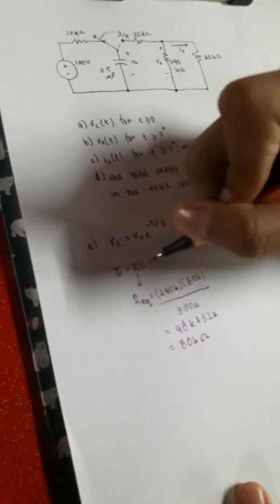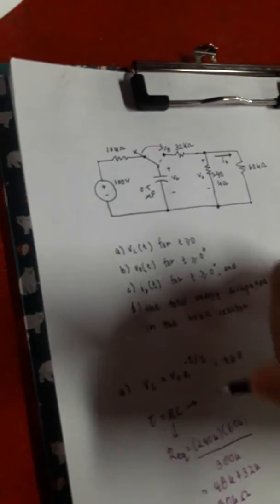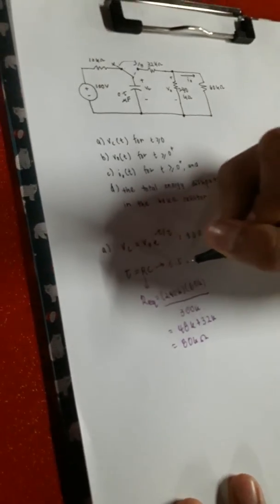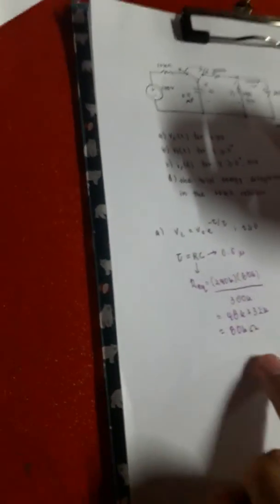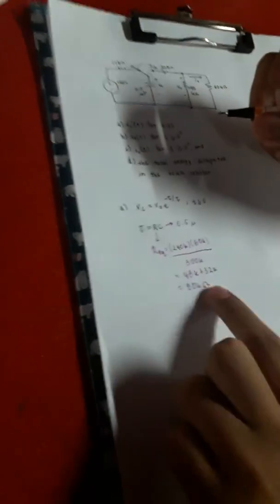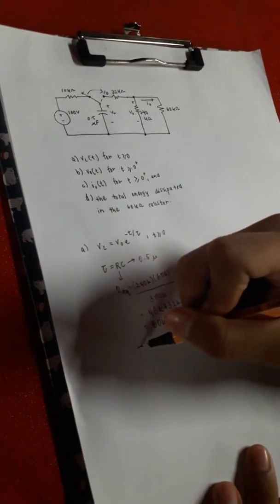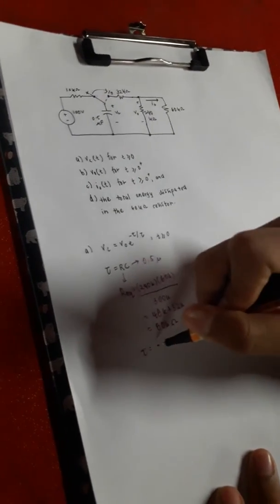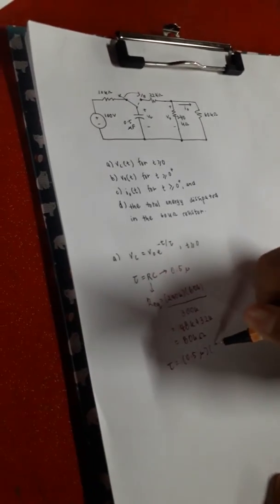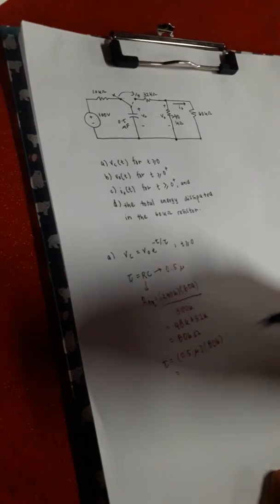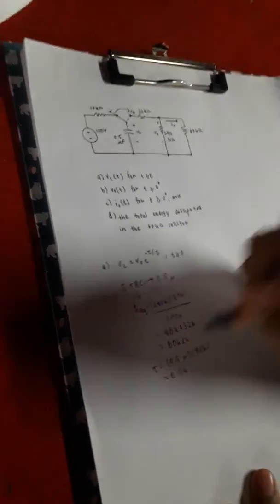Then we find the C. C is given as 0.5F. So then we just need to multiply the two RC given. So, here we will get tau 0.5 multiply with 80K. Then we will get 0.04 for the tau.